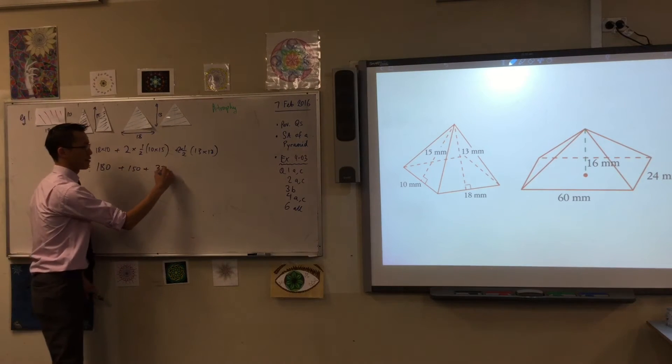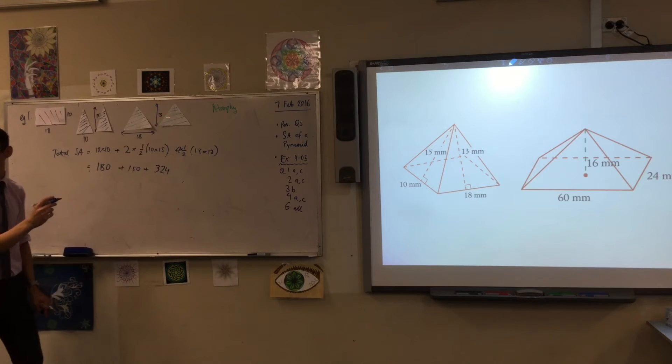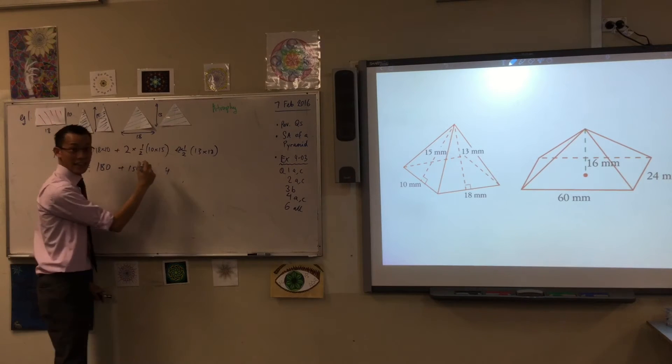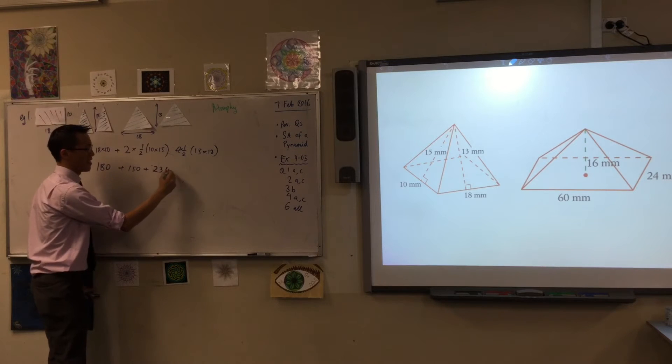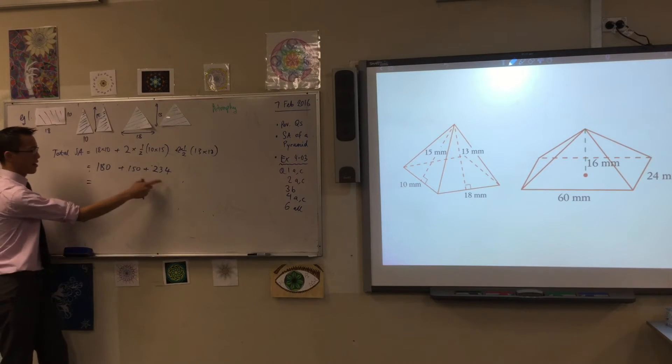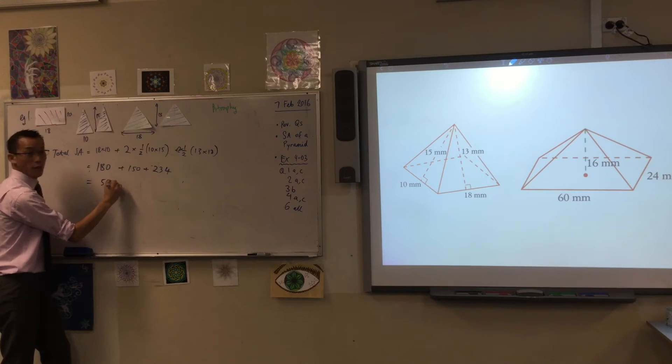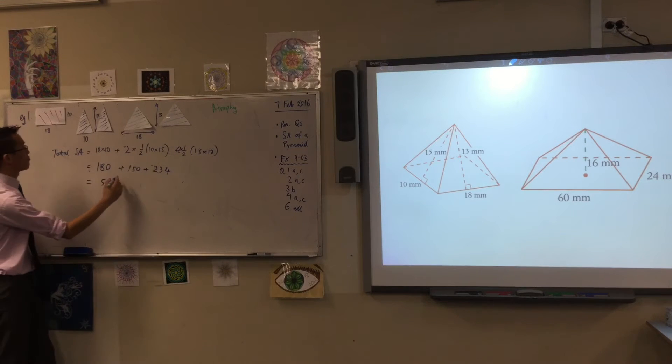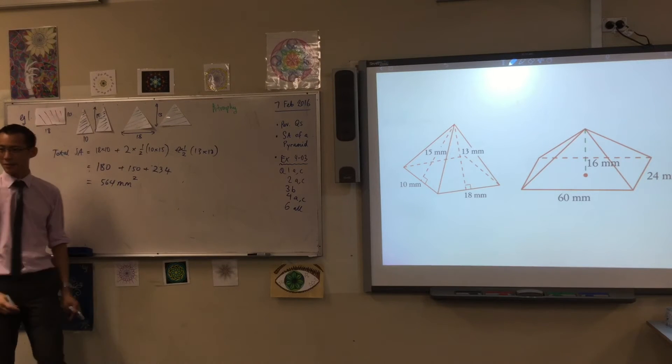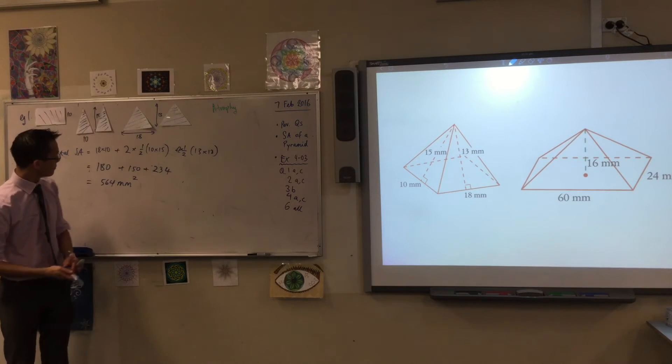Can someone confirm that for me? 234. That might look as that is. Yes? No? 234? And so now you can add them all up. 330, that's going to be 564, right? Yep. What's the unit? Millimeters squared. You happy with that? Okay.